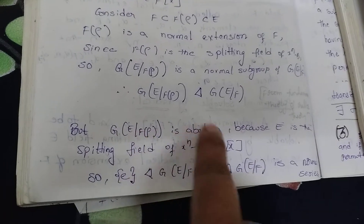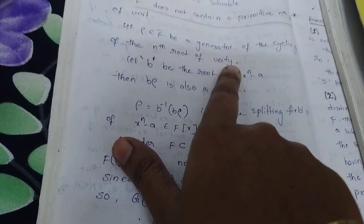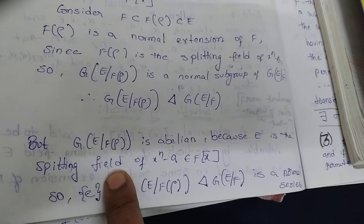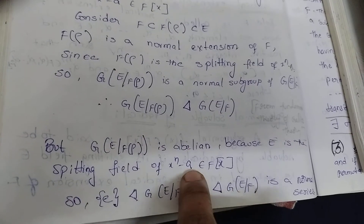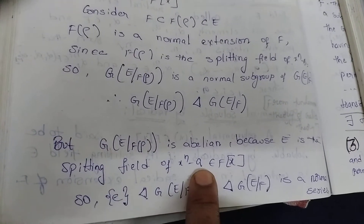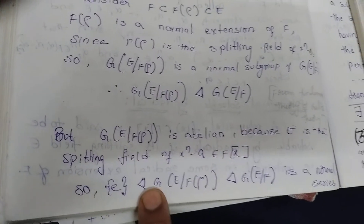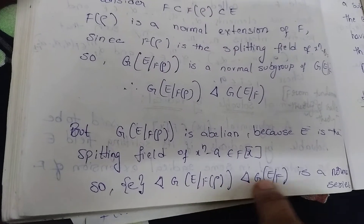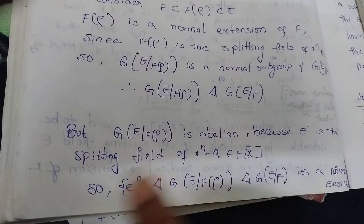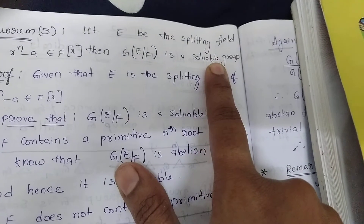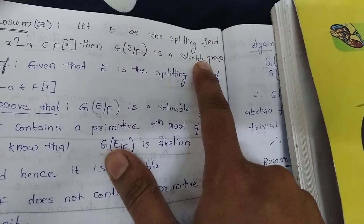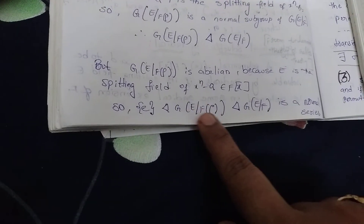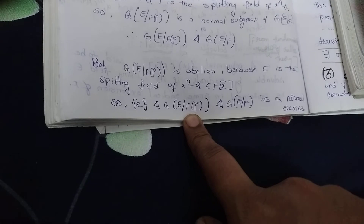G(E/F(ρ)) is abelian. Since ρ is an nth root of unity, G(E/F(ρ)) is abelian. Because E is the splitting field of x^n minus a, G(E/F(ρ)) is abelian. So G(E/F(ρ)) is a normal subgroup of G(E/F), and since the quotient factors are abelian, this gives us a normal series. For a solvable group, the normal series must have abelian factors, which is satisfied here.